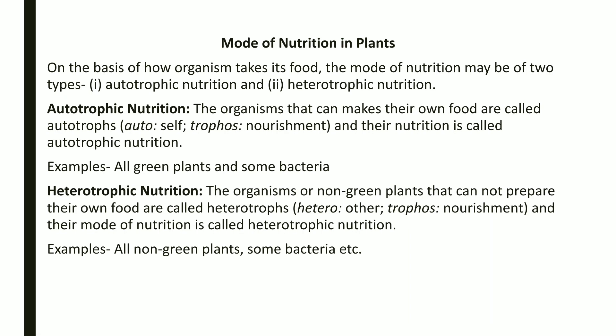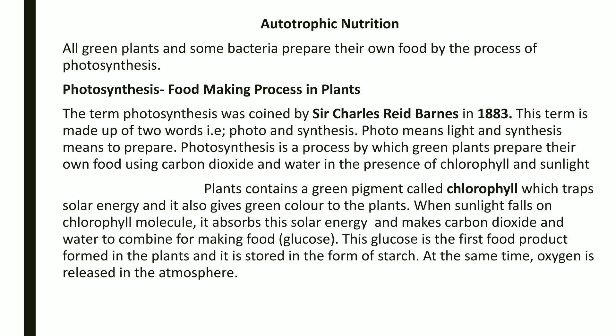Heterotrophs — from 'hetero' meaning other, and 'trophos' meaning nourishment — are organisms that depend on other living plants for food. This nutrition is called heterotrophic nutrition. Examples include all non-green plants and some bacteria that cannot make their own food and fall in the category of heterotrophic organisms.